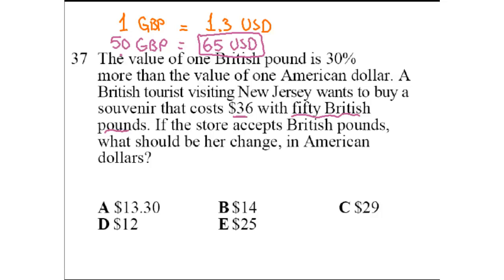Even though he's going to pay them as 50 British pounds, they're the equivalent of $65. If the store accepts British pounds, what should be her change in American dollars? So she's going to give the person at the store the equivalent of $65 for something that costs $36. How much is her change going to be? 15 minus 6 is 9, and 6 became a 5. 5 minus 3 is 2. So $29 is the change.